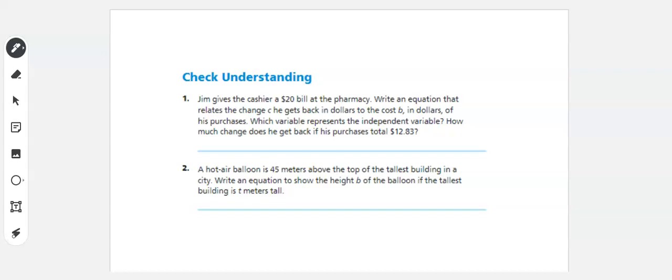Jim gives the cashier a $20 bill at the pharmacy. So he gives him $20. We're going to write an equation that relates the change, C, he gets back in dollars to the cost, B, in dollars, of his purchase, which represents the independent variable.